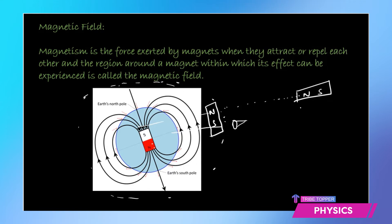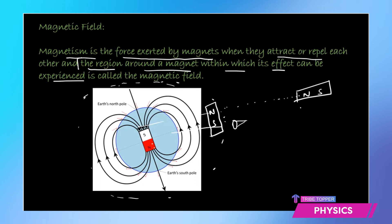So let's do a proper definition. What is magnetism? That is basically the force that will be exerted by the magnets when they attract or repel each other. And what is magnetic field? The region around a magnet within which its effect can be experienced is called magnetic field.